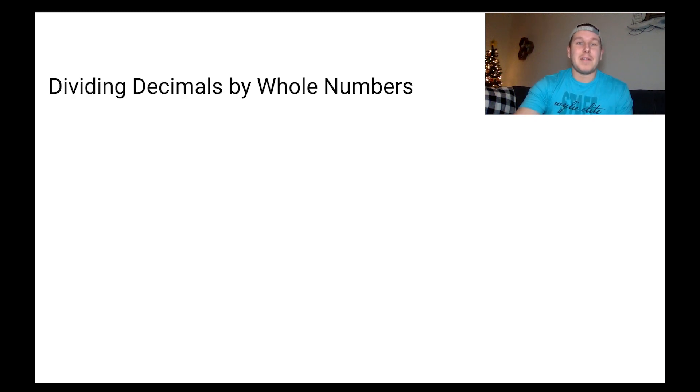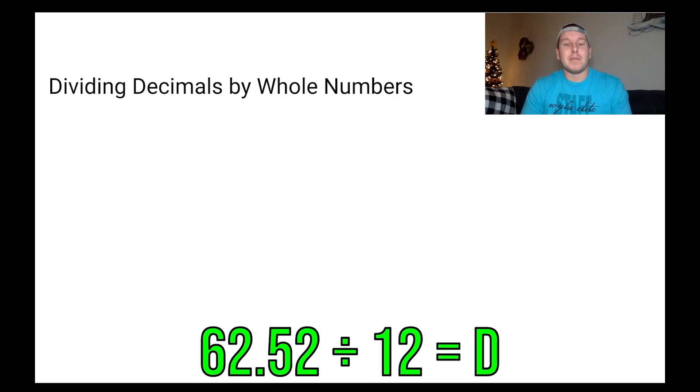First, we're going to learn a little bit about dividing decimals by whole numbers. We've got an equation here at the bottom 62.52 divided by 12 equals D for Danny the decimal.